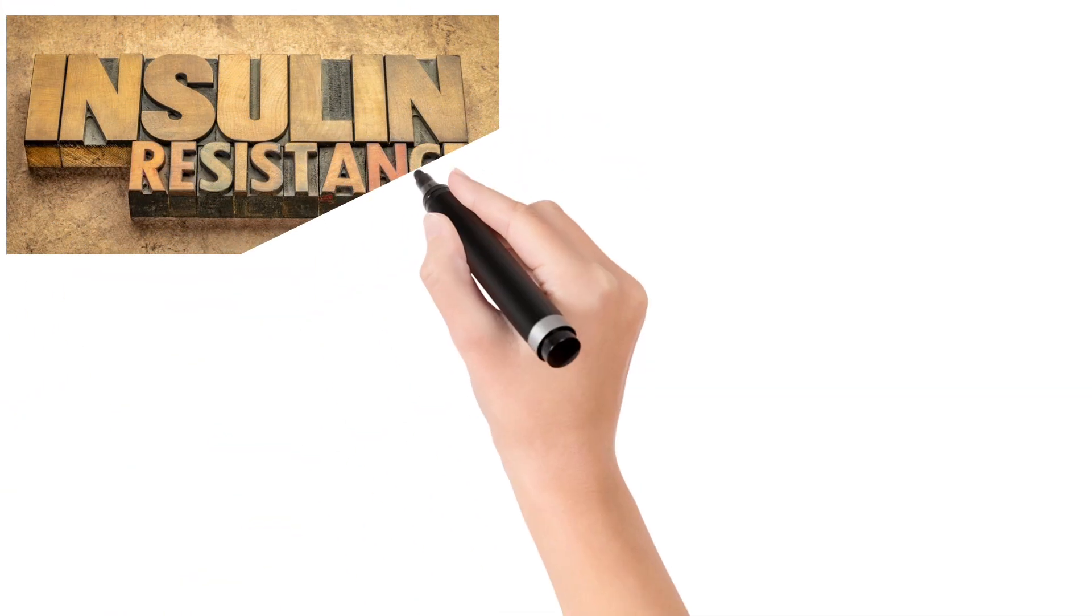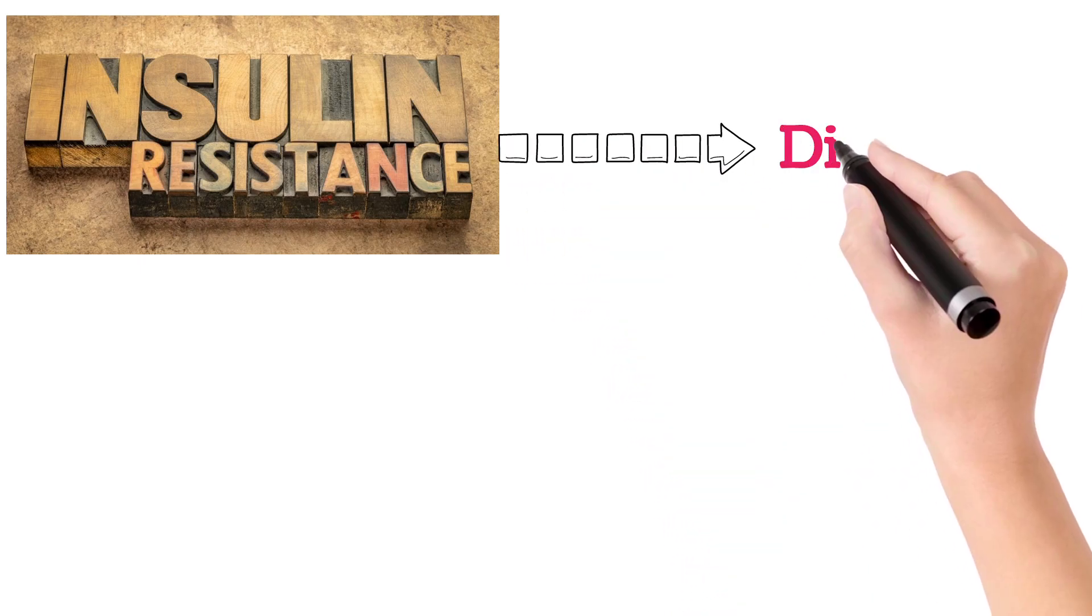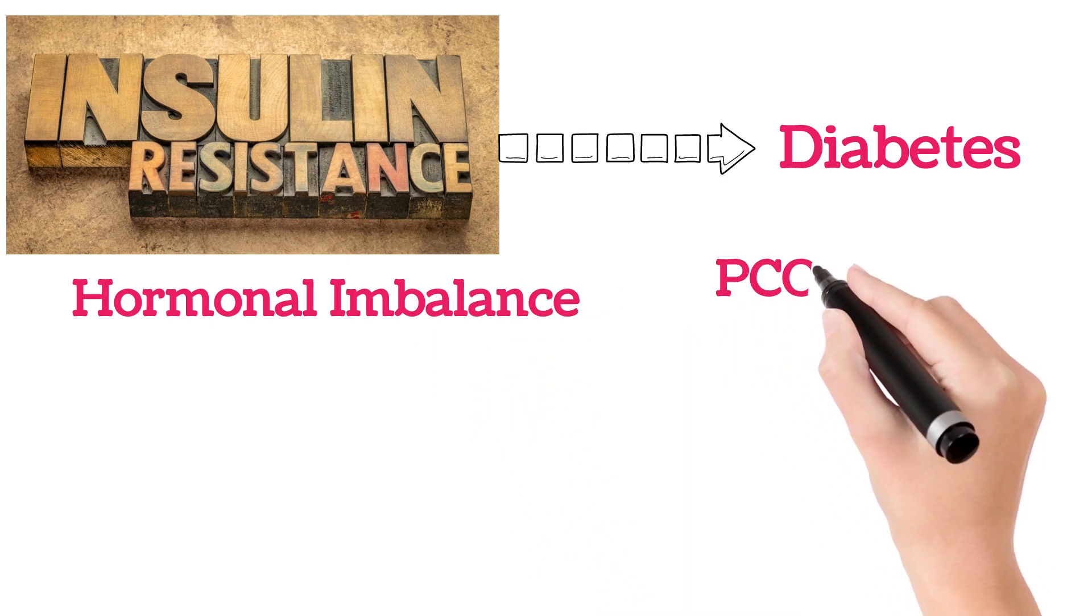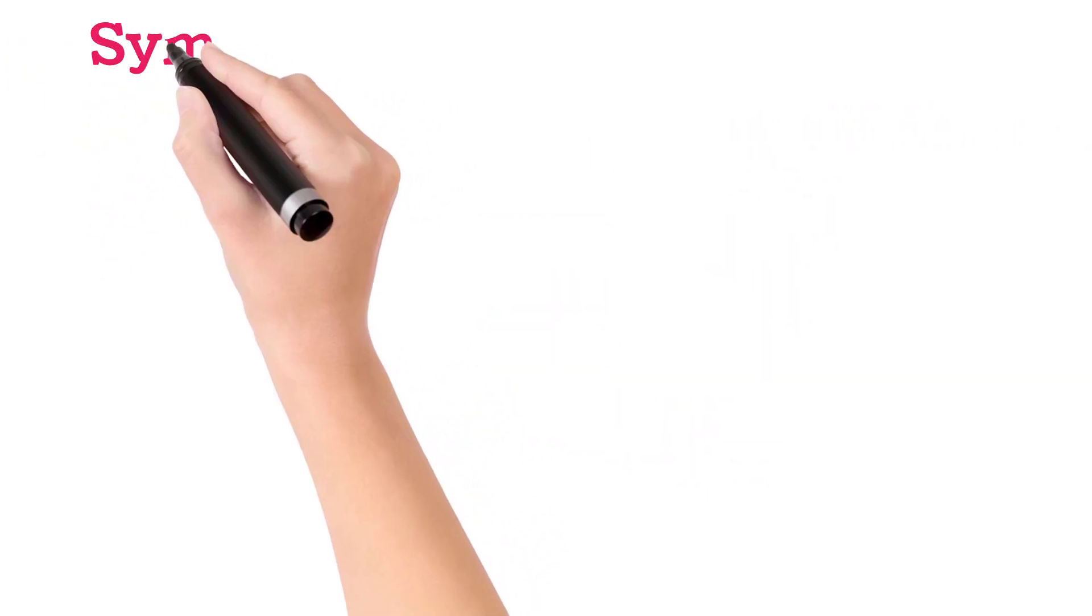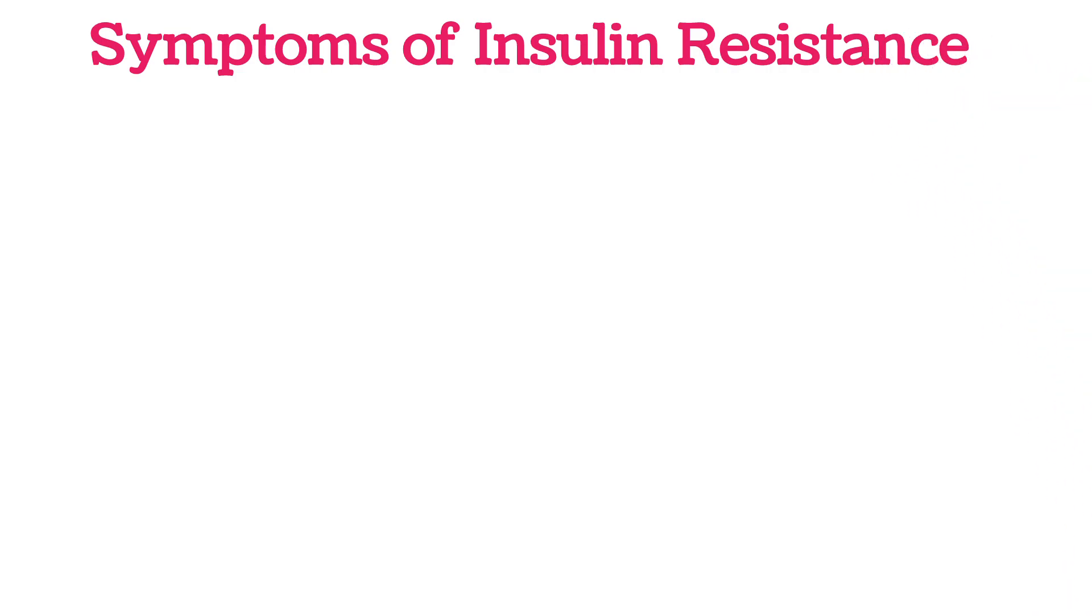If insulin resistance is not treated, it may eventually lead to type 2 diabetes. There are also chances of hormonal imbalance, PCOS, fatty liver, dementia, etc. Basically, if there is insulin resistance, we see certain symptoms.